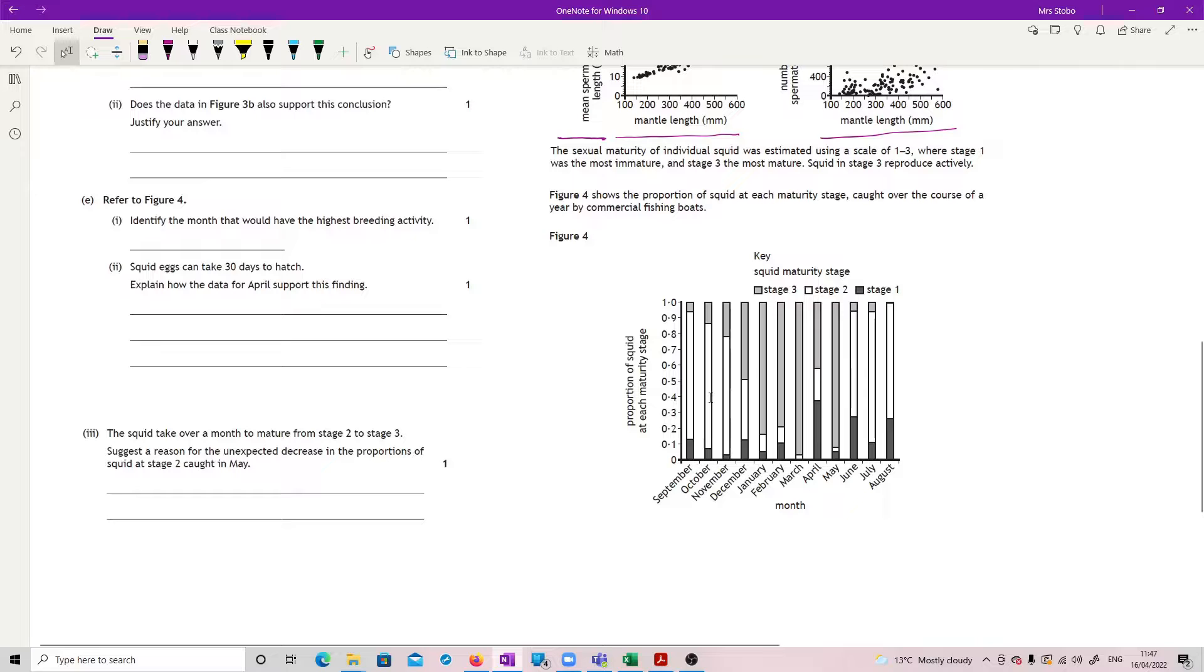Figure 4 shows the proportion of squid at each maturity stage caught over the course of a year by commercial fishing boats. We've got a coded bit here. So our stage 1, the least mature, is the dark banding at the base. Then we've got stage 2, which is our white block. And then we've got stage 3, the sexually mature ones.